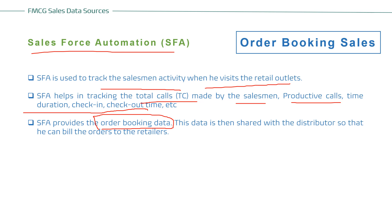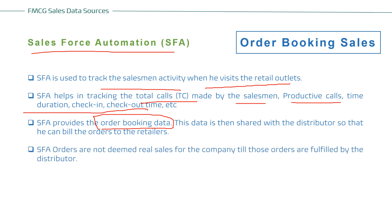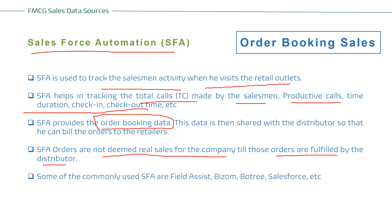Through SFA you can understand which quantities were sold, the count, and which outlets purchased them. You can also track productivity percentage — target versus achievement. This is a very important software for companies to track market situations, plan AOPs, and strategize. Importantly, SFA orders are not deemed real sales until fulfilled by the distributor. Once the distributor fulfills the order to that outlet, the sale is counted as real. Commonly used SFA tools include Field Assist, Bishom, Bowtree, and Salesforce.